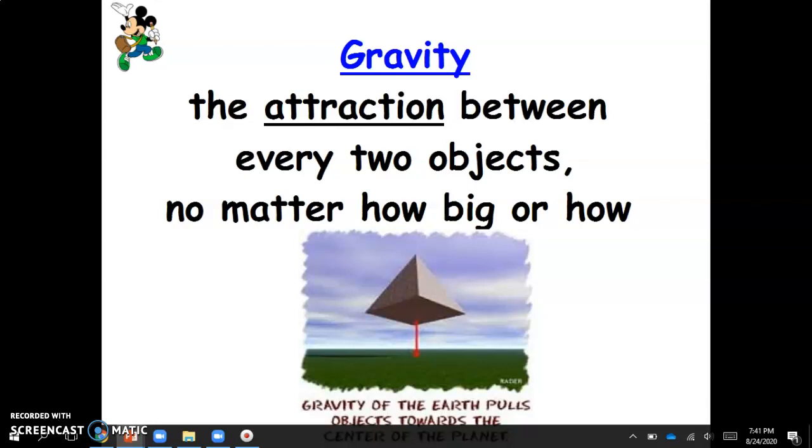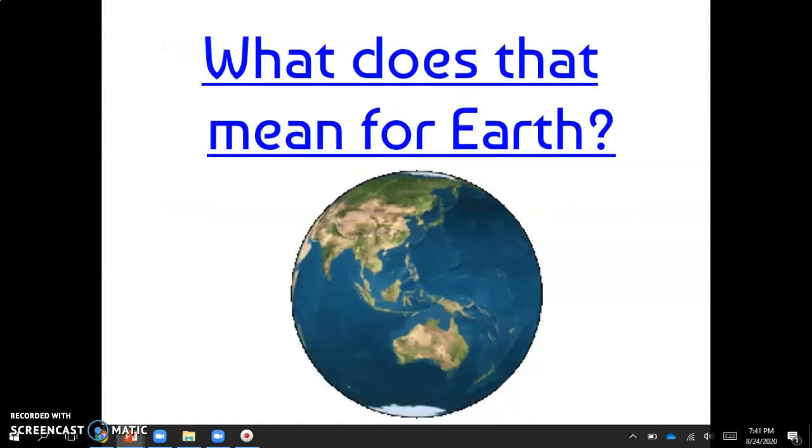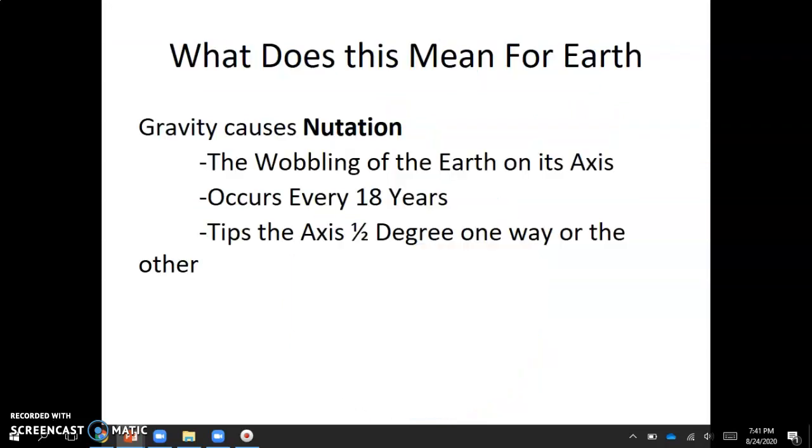And gravity is different on other planets as well. So if you were to go to a different planet and you were able to get out and walk on that planet, depending on how attractive the gravitational force is, you would maybe feel a lot heavier than you do here on Earth. So what does that mean? So gravity is actually the cause for nutation. And remember, we learned about nutation yesterday. So gravity is the cause for that wobbling back and forth. And just a reminder, a nutation happens every 18 years and it's the wobble of the planet on its axis.